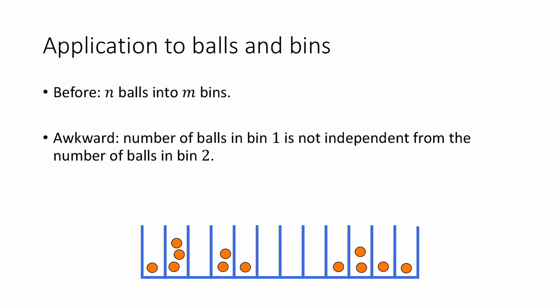One reason is that Poisson random variables are a nice way to analyze balls and bins. Recall that when we discussed balls and bins before, we were just dropping n balls into m bins at random. Frequently in these problems, we care about the occupancies of each bin — how many balls land in each bin. An awkward fact is that the occupancy of bin 1 is not independent from the number of balls in bin 2. For example, if there are lots of balls in bin 2, then maybe there are going to be fewer balls in bin 1. So these are not independent, and that sometimes gets in the way when trying to analyze things.